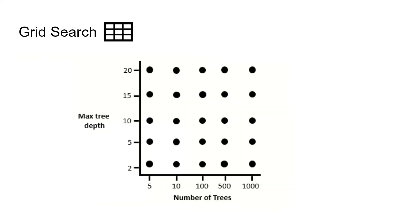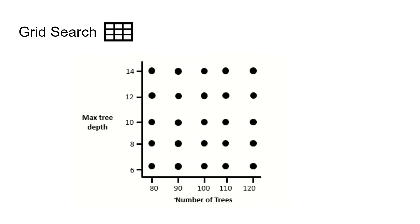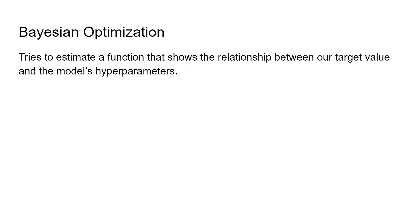The next method is grid search. This is quite similar to random search, but instead we go through every possible combination of hyperparameters. Here we're looking at two hyperparameters: maximum tree depth and number of trees, and the grid represents all possible combinations. After applying grid search, we find the best model performance comes from 100 trees and a maximum tree depth of 10. We can then narrow the grid search to become more granular, setting the number of trees around 100 and maximum tree depth around 10.